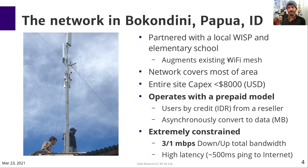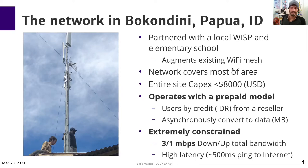Today we're looking at a network in Bokundini, Papua, Indonesia. This network was deployed in partnership with the local internet service provider and an elementary school, and it augments an existing Wi-Fi mesh network in the area. The network covers most of the town from a single site, and the entire site was built with capital expenditures of less than $8,000 US dollars equivalent. The network operates with a prepaid model, which is pretty common in many parts of the world, where users buy credit in the local currency from a reseller and then asynchronously convert that credit into data for network access.